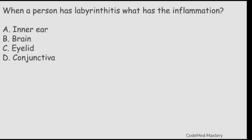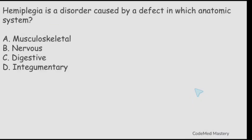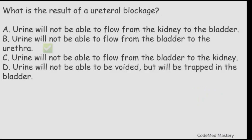Next question: hemiplegia is a disorder caused by a defect in which anatomic system? Option A: musculoskeletal. Option B: nervous. Option C: digestive. Option D: integumentary. The right answer is option B, nervous.